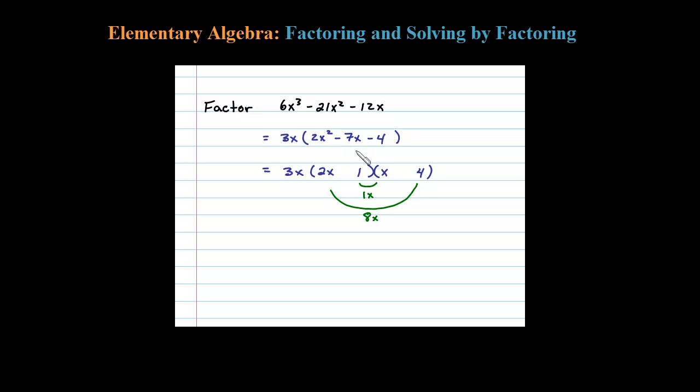For that to happen, the 8 better be negative and the 1 better be positive. So that tells me I'm going to put a plus there and a minus there. Let's check: 1 times -4 is -4.